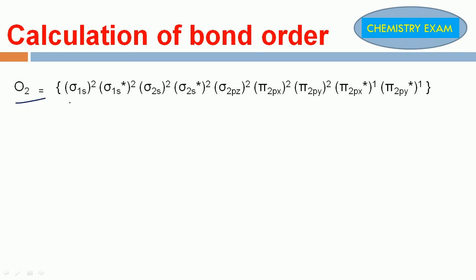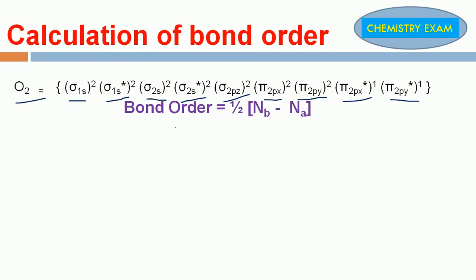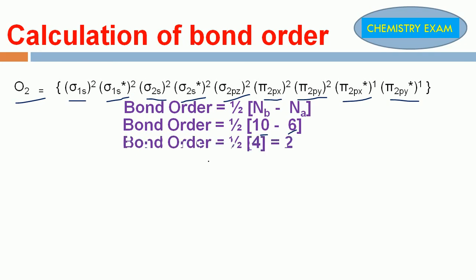Next, O₂. What is the electronic configuration? Sigma 1s², sigma star 1s², sigma 2s², sigma star 2s², sigma 2pz², pi 2px², pi 2py², pi star 2px¹, pi star 2py¹. Bond order: bonding electrons 10, anti-bonding electrons 6. So 1/2 into (10 minus 6) equals 1/2 into 4 equals 2. The bond order for O₂ molecule is 2.